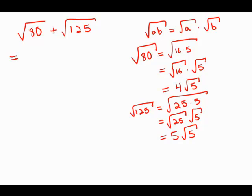Well, now it's much easier. We have 4 root 5 plus 5 root 5. Well, if you have 4 of anything plus 5 of that same thing, what you have altogether is 9 of that thing, 9 root 5. And this is answer choice A.